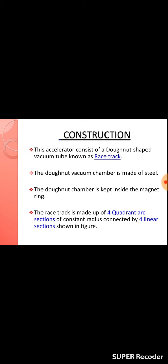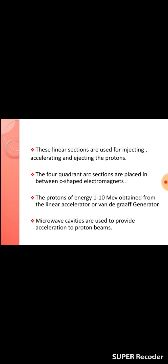This is the cross-section of the ring. The definite vacuum chamber is made of steel and kept inside the magnet ring. The race track is made up of four quadrant arc sections of constant radius connected by four linear sections used for injecting, accelerating, and ejecting protons. The four quadrant arc sections are placed in between C-shaped electromagnets. Protons of energy 1 to 10 mega electron volts are obtained from a linear accelerator or van de Graaff generator. Microwave cavities are used to provide acceleration to the proton beams.